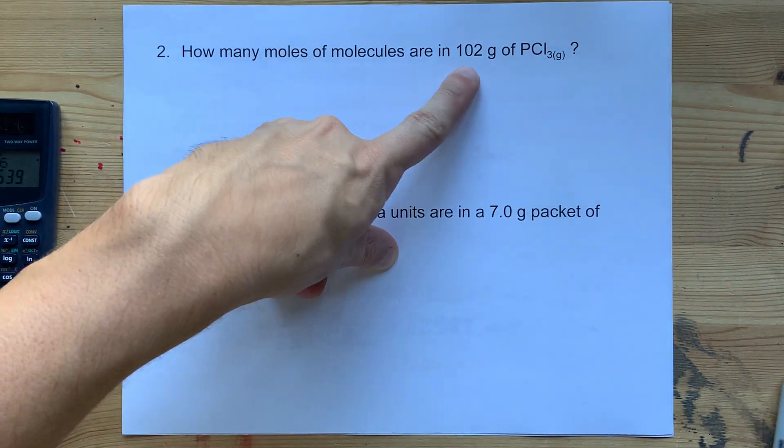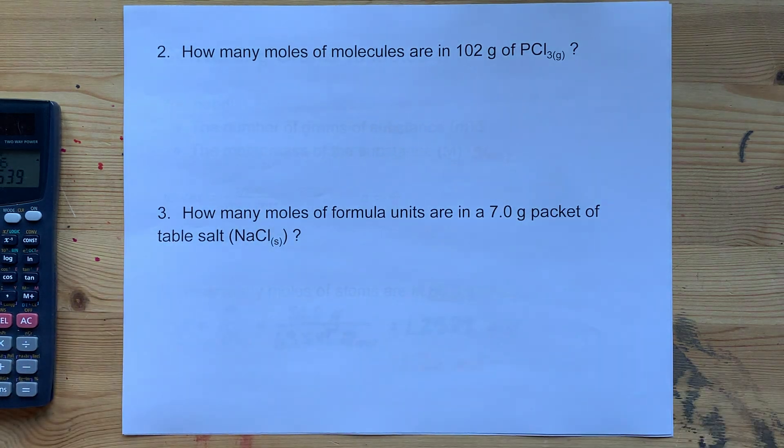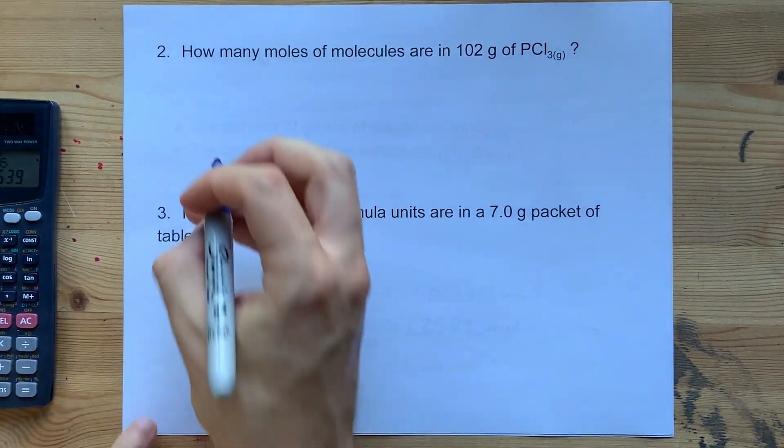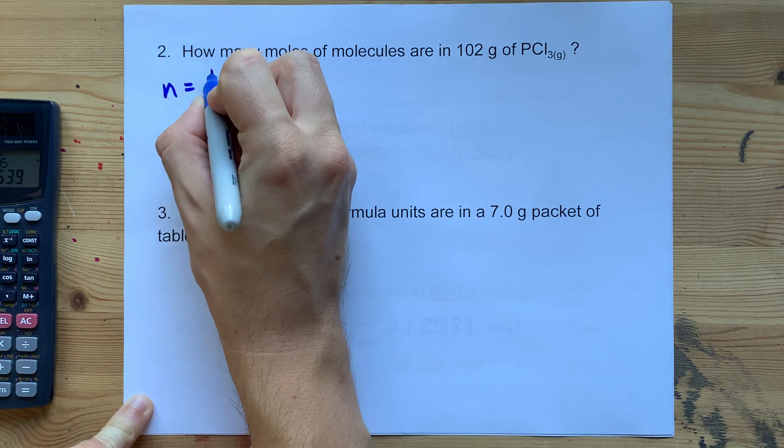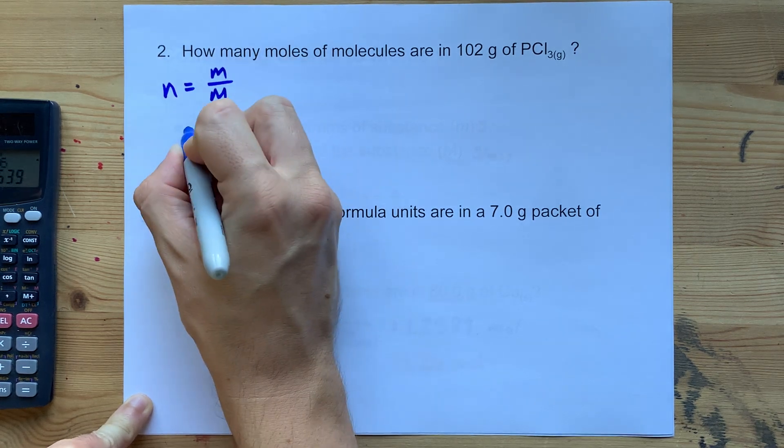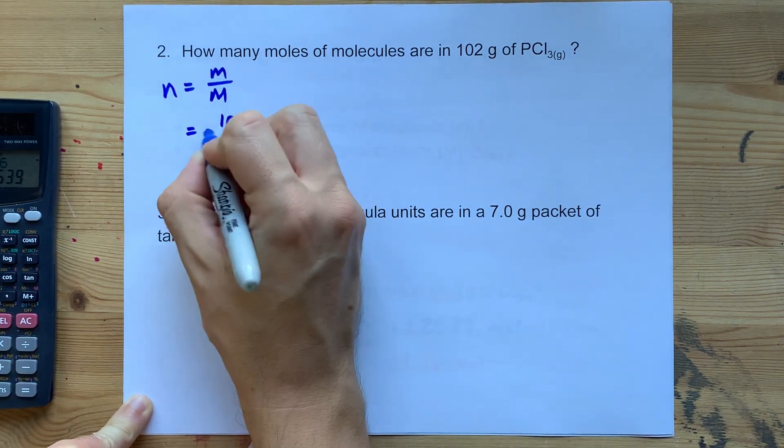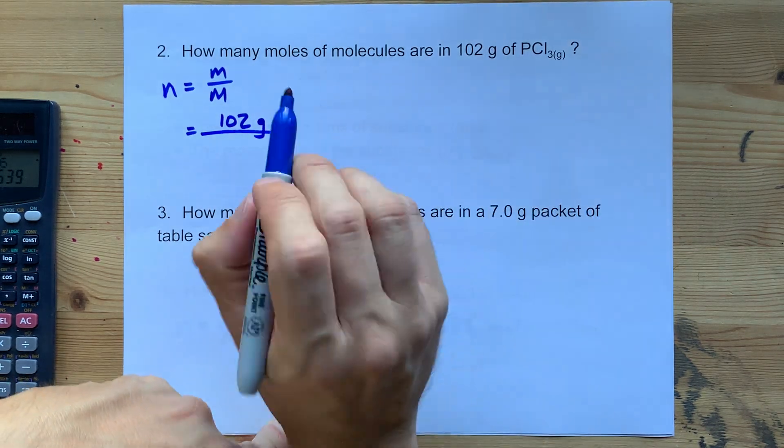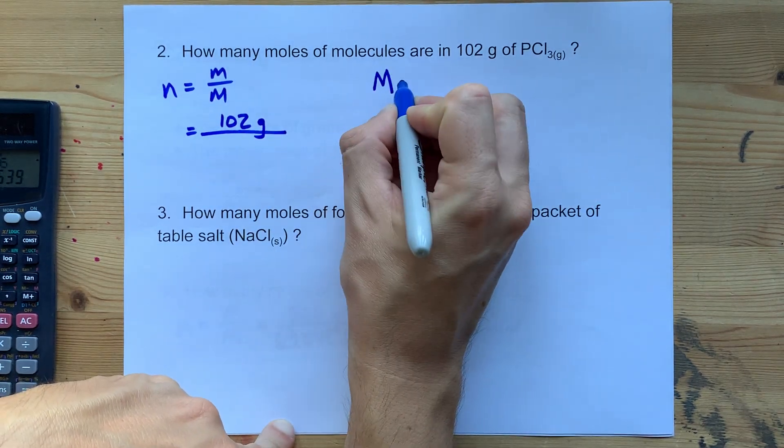How many moles of molecules are in 102 grams of PCl3? Well, the number of moles is mass over molar mass. That's 102 grams divided by the molar mass of PCl3.